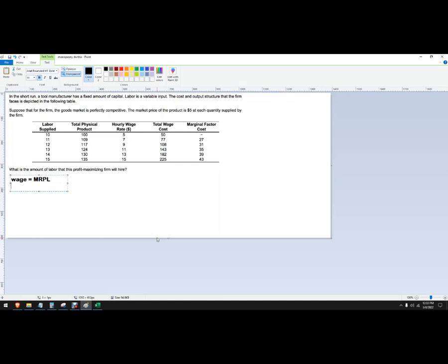In this problem we've got an imperfect labor market that we're hiring into, so that usually means a monopsony. So we're going to hire in this case up until the marginal revenue product of labor equals the marginal factor cost.